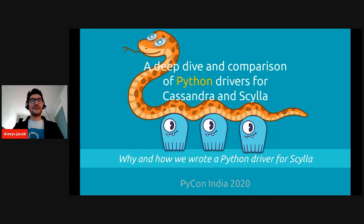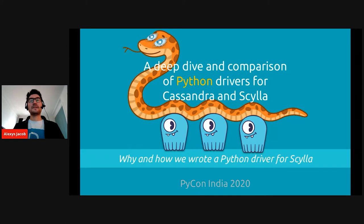Well, hello everyone. I'm really happy to be at Python India. So in this talk, I will detail Cassandra and Scylla low-level architecture, and explain how it's used by the Python Cassandra driver, and show you how we extended it to write a Python driver for Scylla. There will be diagrams, emojis, Python code, and hopefully amazing performance graphs.